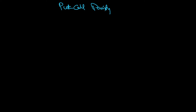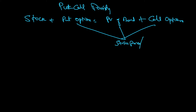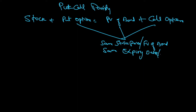Put-call parity — 'parity' comes from the word 'par', meaning equal. The put-call parity formula goes like this: stock plus put option is equal to present value of bond plus call option. The condition is that all three should have the same strike price, or future value of bond, and the same expiry date or maturity date.